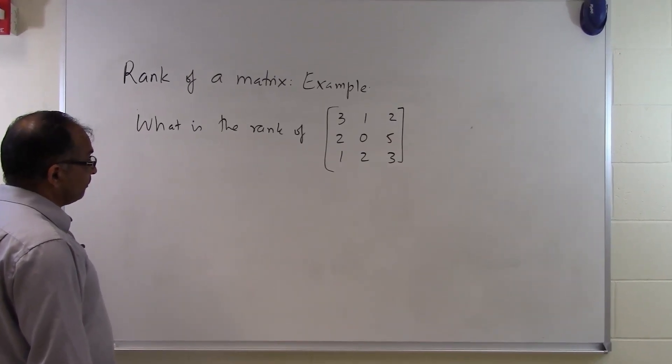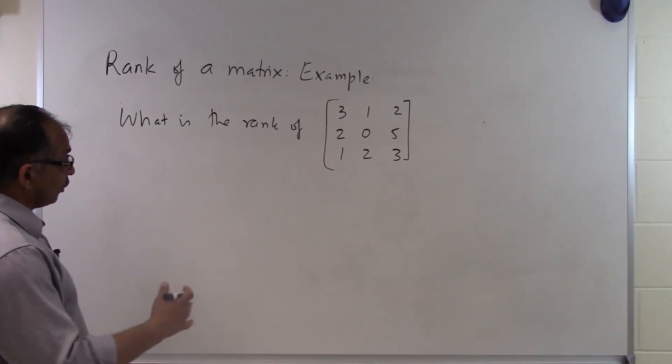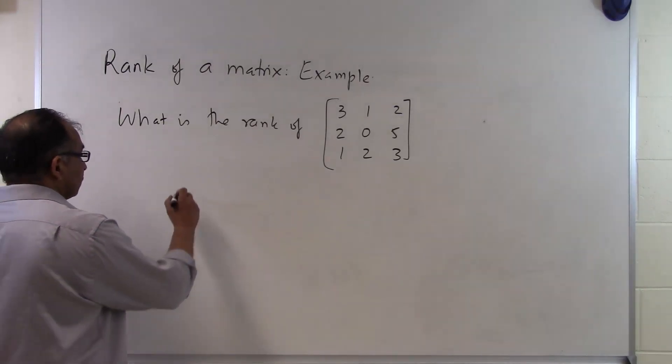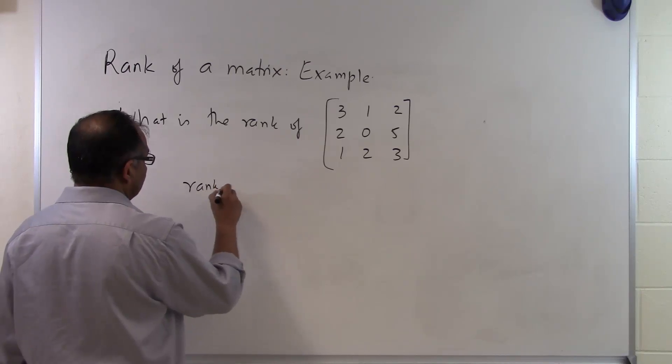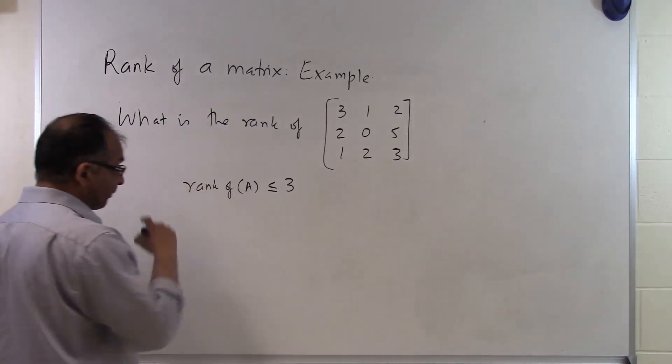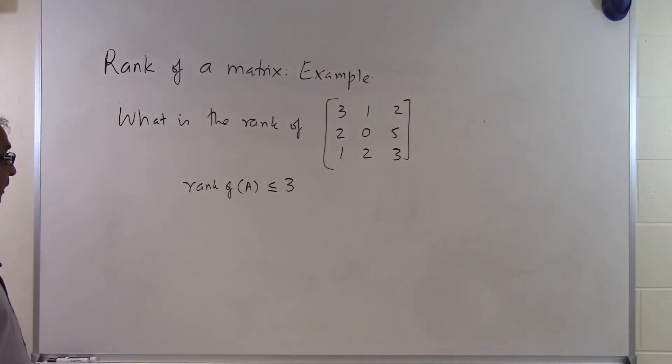So the largest submatrix which I'm going to get from a 3 by 3 matrix will be a 3 by 3. So that itself tells me that rank of A is going to be less than or equal to 3. So it can be maximum of 3, but it might be less than that.